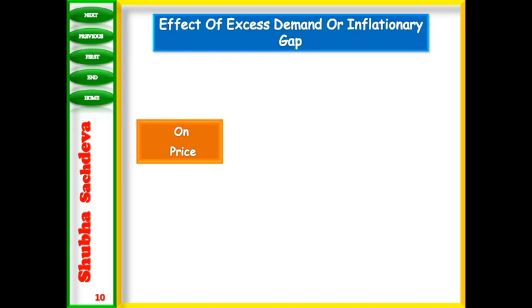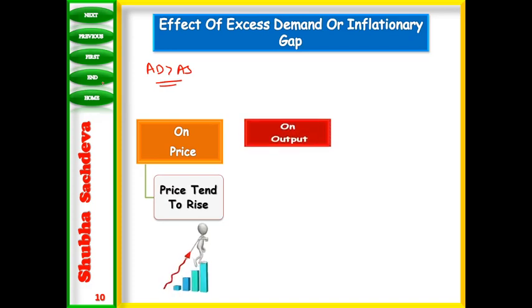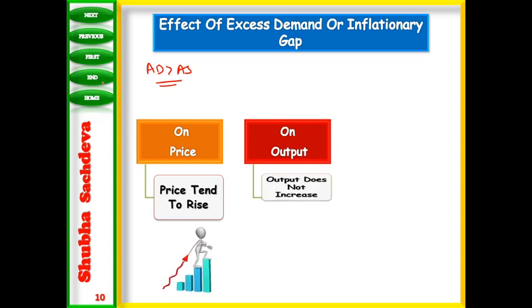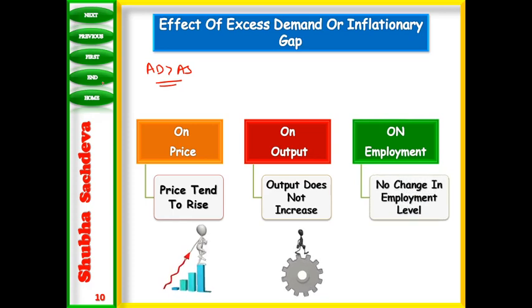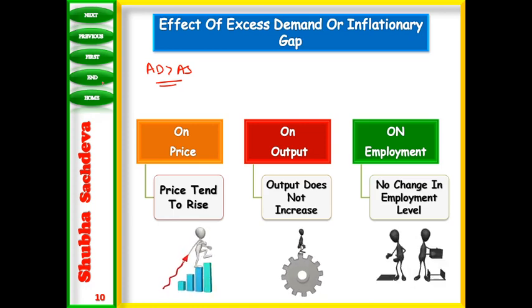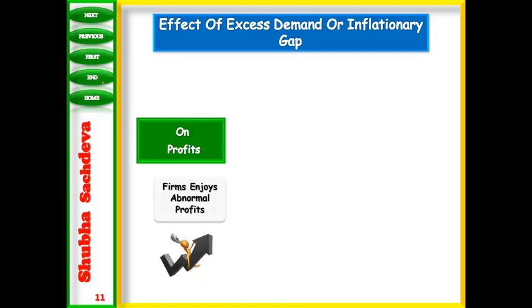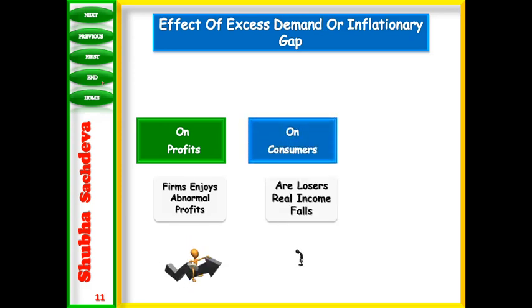What are the effects of excess demand or the inflationary gap? When aggregate demand is greater than aggregate supply, prices must increase. Output cannot be increased because we have made complete use of all resources at full employment. Employment also cannot be increased. So there is no change in output, no change in employment, but prices will increase and firms will enjoy abnormal profits because prices are rising without needing to increase production.